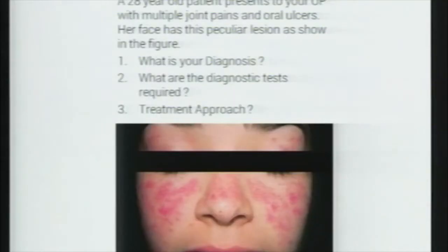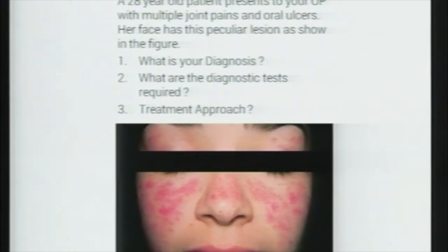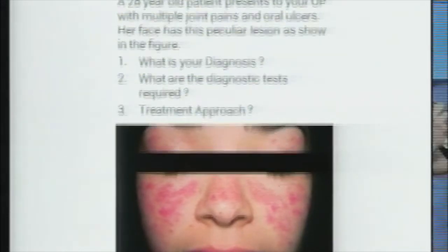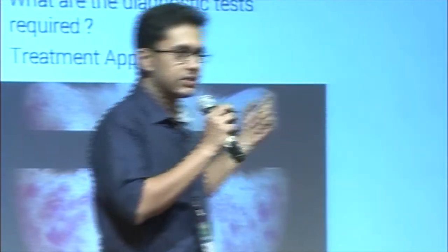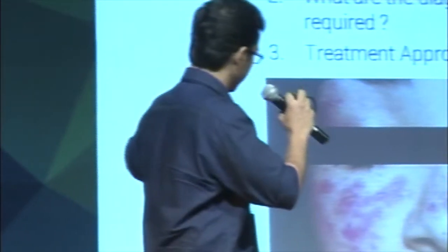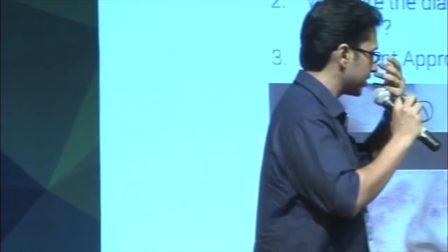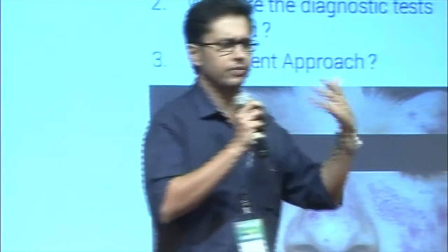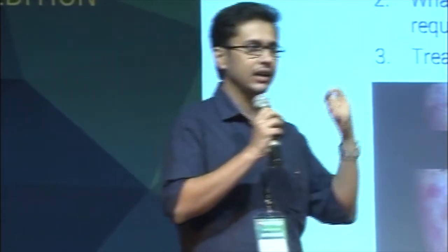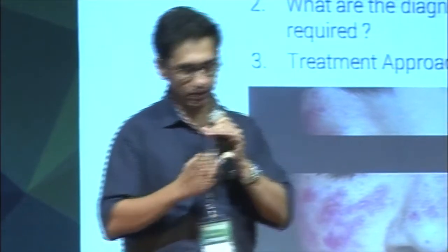Doctors love clinical cases. Here is an actual clinical case: a patient presenting with a peculiar lesion on her face and joint pains. A reasonably good doctor is supposed to make a diagnosis of SLE — systemic lupus erythematosus — just by seeing the features. You might have read this in a textbook, but you really learn it either by doing or by clinical cases.